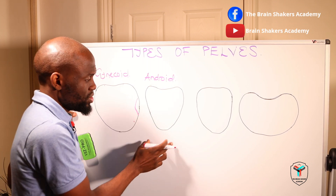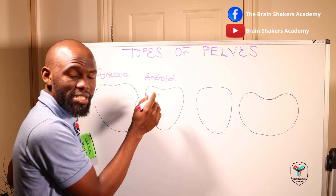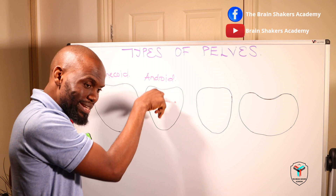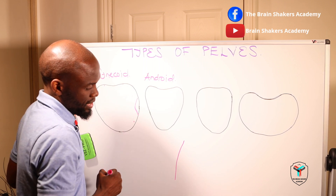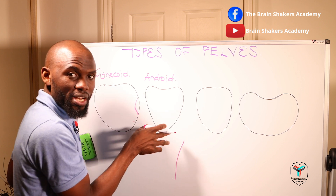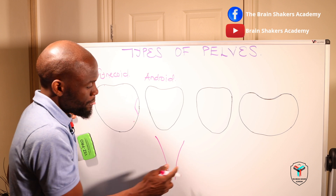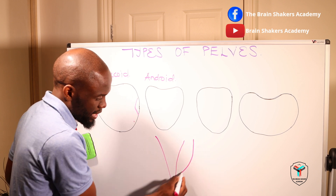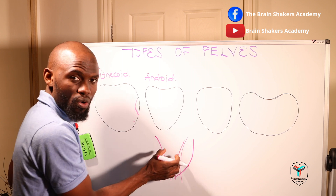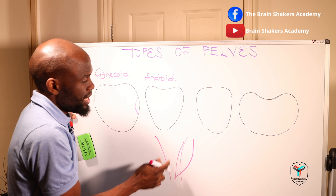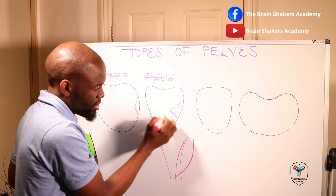With the android pelvis, it is kind of heart-shaped. The sacral promontory may not be prominent, but the sacrum is straight rather than curved, giving the cavity a funnel appearance — a deeper pelvic cavity with a straight sacrum. The ischial spines in the android pelvis are more prominent.